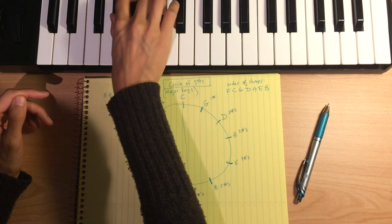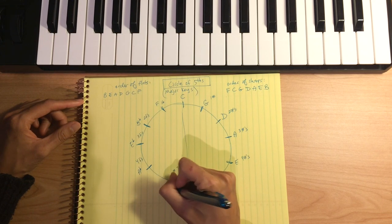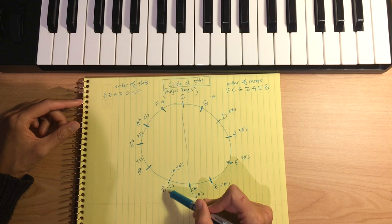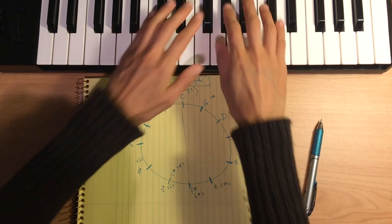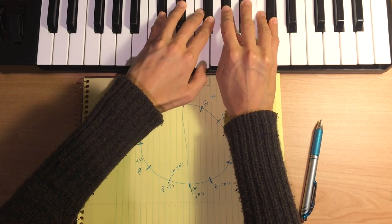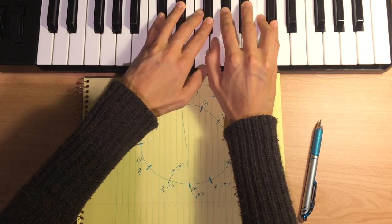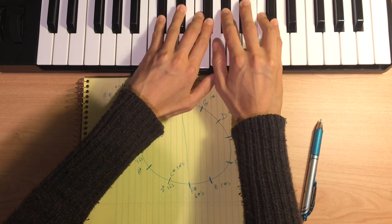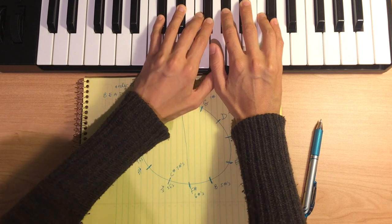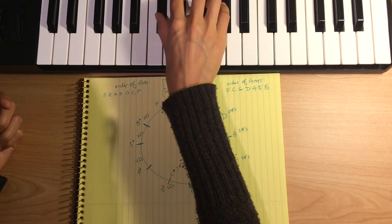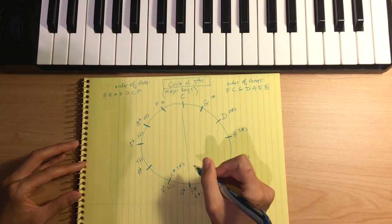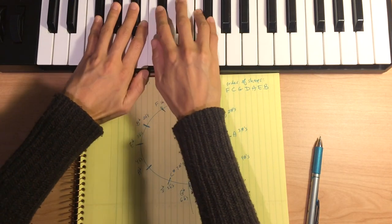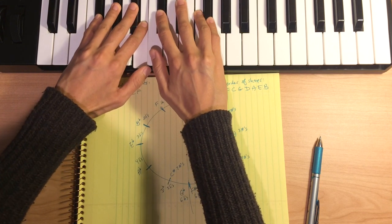Going up a fourth from A flat, we get to D flat, which has five flats. D flat and C sharp are enharmonic — meaning they have the same notes on the piano but are spelled differently. D flat major has five flats: B flat, E flat, A flat, D flat, G flat. Going up a fourth from D flat, we land on G flat. G flat has six flats, and G flat and F sharp are also enharmonic keys. Here's our G flat major scale — same notes as F sharp major, just notated differently.